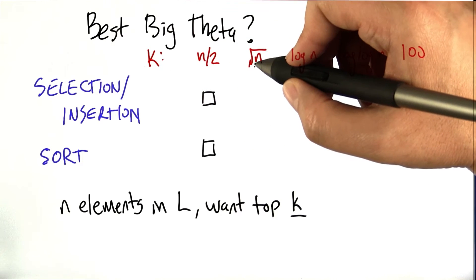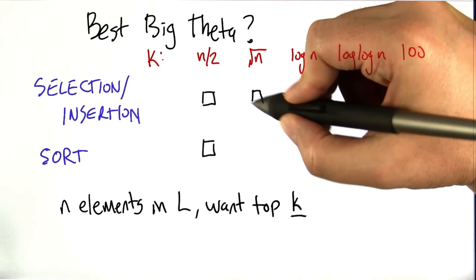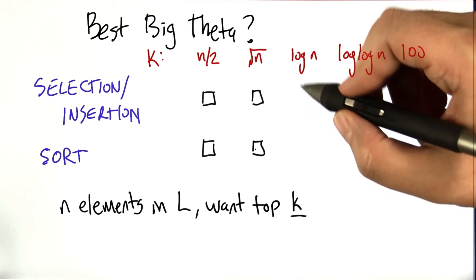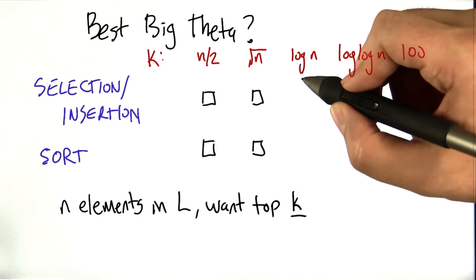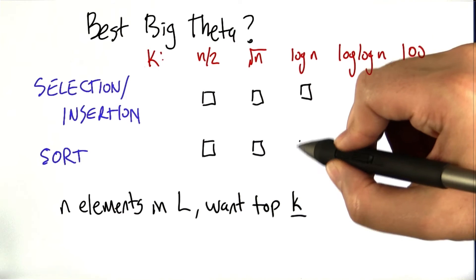Say you want to find the best root n items. Is it better to use selection or sorting? If you want the top log n items, which one is better?